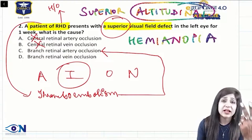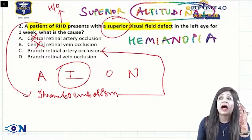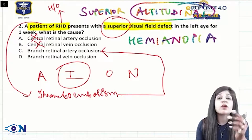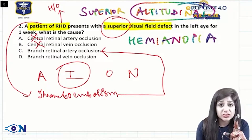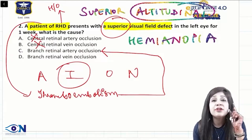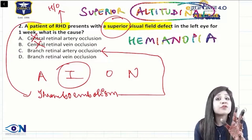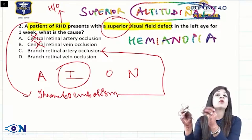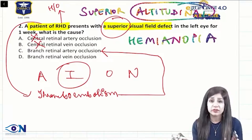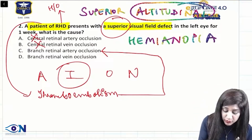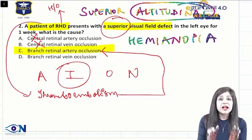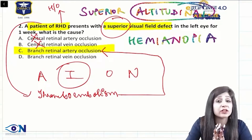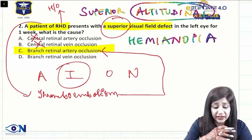Branch retinal artery occlusion is the answer here because they are giving you a history of RHD. In RHD, we have a tendency for emboli and thromboembolism forming, and thromboembolism will go and block the artery, not the vein. That is why the answer is branch retinal artery occlusion and not vein occlusion.